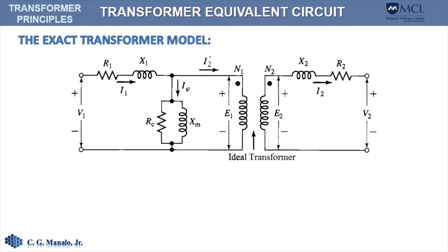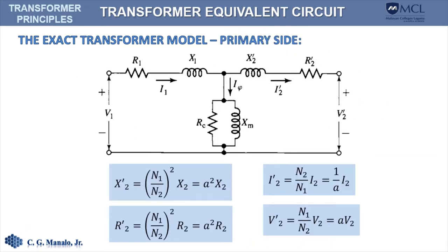It is actually possible to come up with an exact model of the transformer without the ideal transformer in the model. This can be done by transferring the elements of the secondary winding towards the primary side and reflecting those quantities. In that model, this element is A squared times X2, while this one is A squared times R2. This current, due to the secondary, must equal I sub 2 times A, and this voltage must be V sub 2.